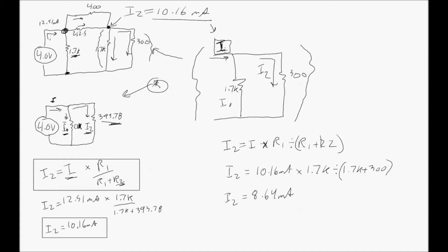Our new I was the I2 that we found in the first major instance where we used the current divider rule. So our new I is our 10.16 milliamps. We have a 1.6K ohm resistor going through our new I1 branch. A 300 ohm resistor resisting the current flowing through our new I2 branch.